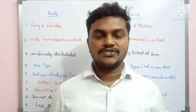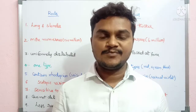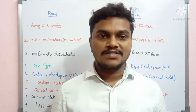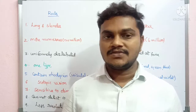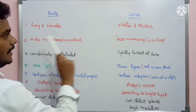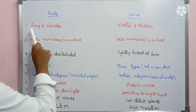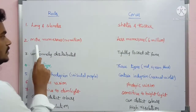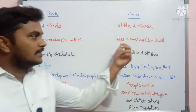Hi students, welcome to our channel. Today we are going to discuss differences between rods and cones, characteristic-wise. Rods are long and slender, while cones are short and thicker. Rods are more numerous — 120 million — whereas cones are less numerous.